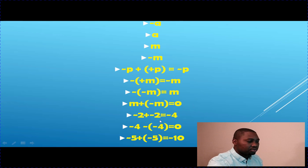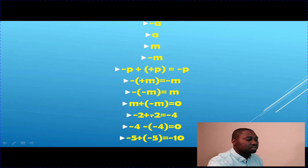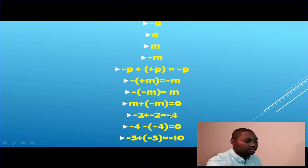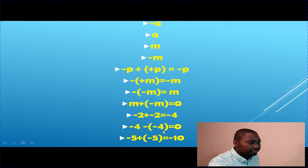Negative 2 plus another negative 2 equals negative 4. It's like someone owes two dollars to one person and another two dollars to another person — two dollars added to another two dollars you owe gives negative 4, meaning you owe four dollars total. So negative 4 minus negative 4 equals zero — it's the opposite of positive 4.